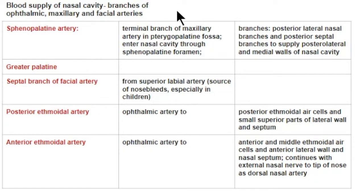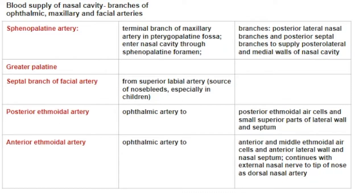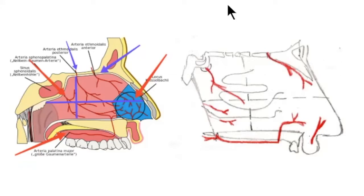The arteries that supply the nasal cavity include branches of both the external carotid artery and the internal carotid artery. From the external carotid we see the sphenopalatine artery, the greater palatine, and branches of the facial artery. From the internal carotid we have the posterior and anterior ethmoidal arteries. One way to organize this is to divide the nasal cavity into four quadrants: supero-anterior, antero-inferior, postero-inferior, and postero-superior.